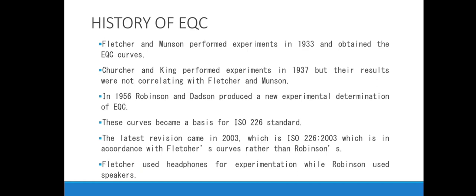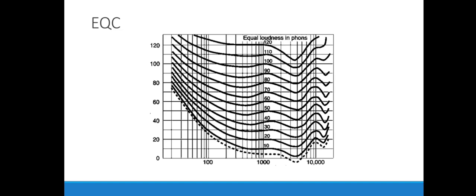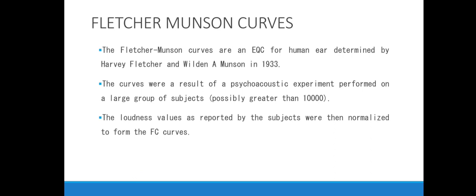This is how the equal loudness contour looks — this is the latest revision, and we'll study this curve in great detail. The Fletcher-Munson curves are the equal loudness contours determined by Fletcher and Munson in 1933. They were the result of a psychoacoustic experiment performed on a large group of subjects — greater than 10,000 — and the loudness values reported were then normalized to form the Fletcher-Munson curves.